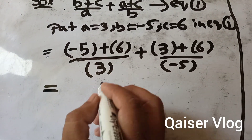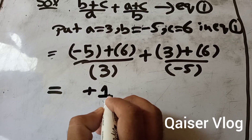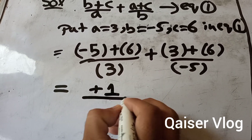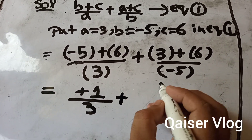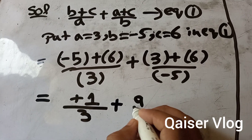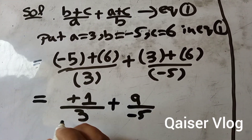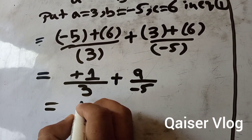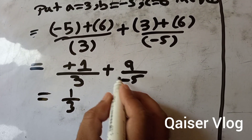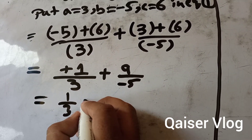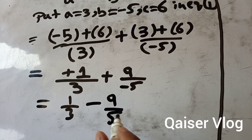Now we solve: -5 plus 6 is +1 (the greater number sign gives positive), and then 3 plus 6 is 9, divided by -5. In the next step it becomes 1/3, then minus and plus gives minus, so 9/5.